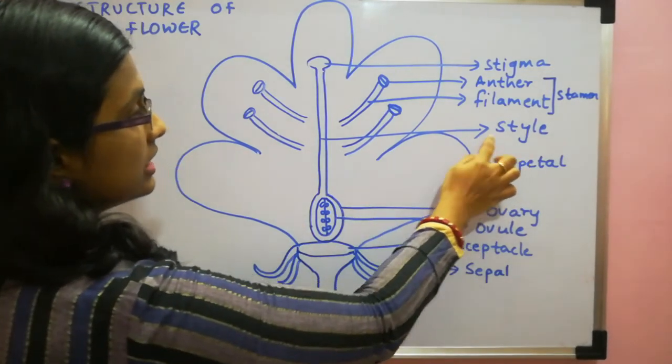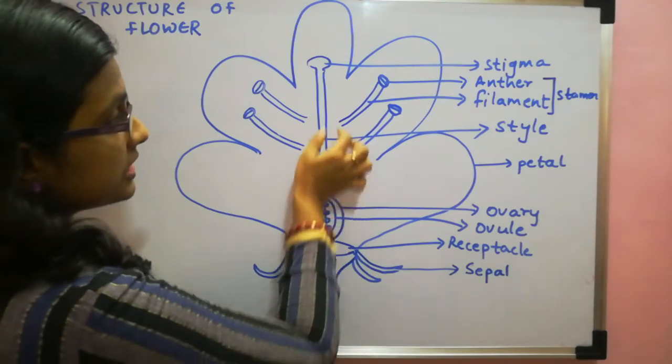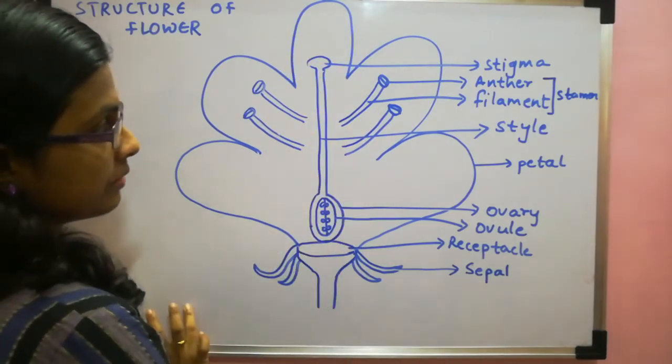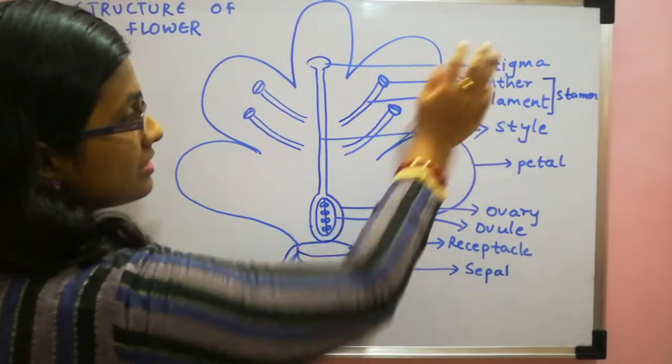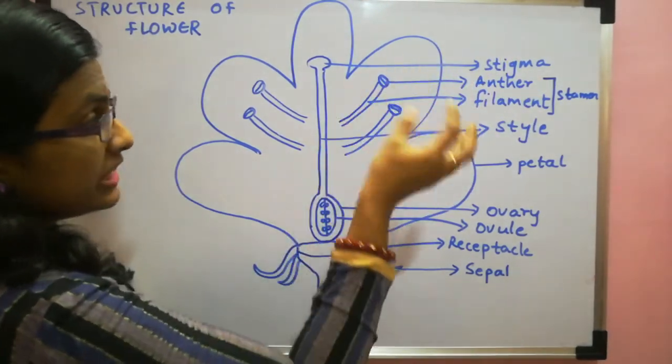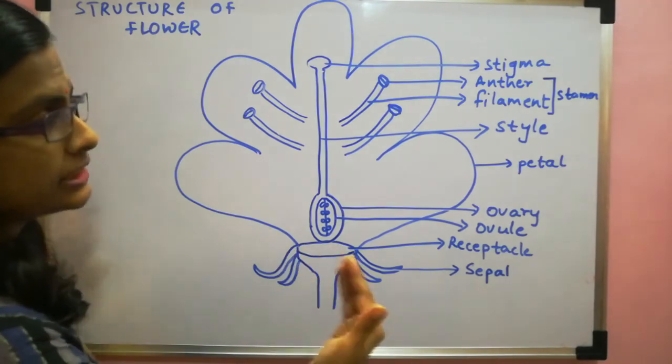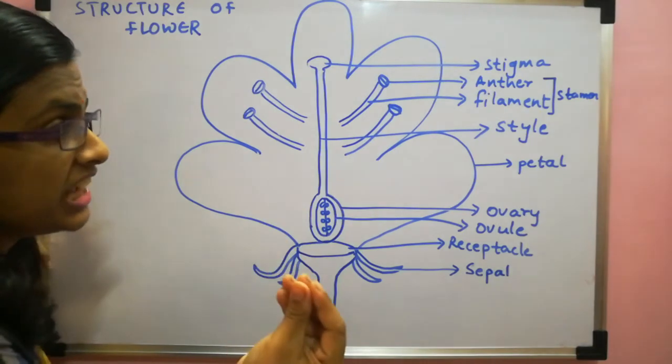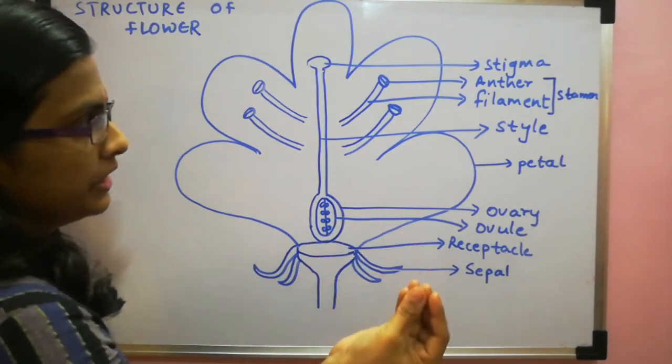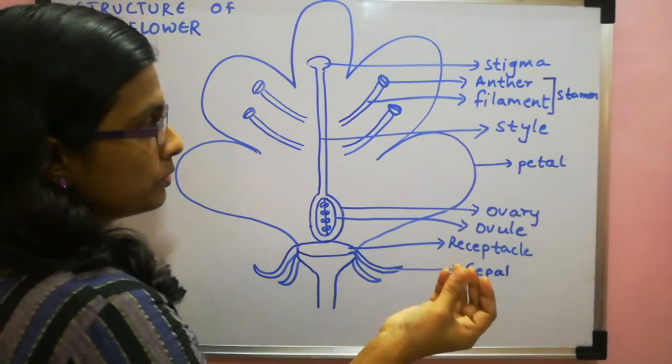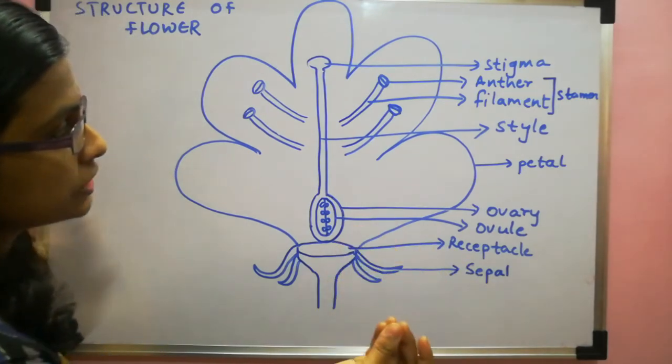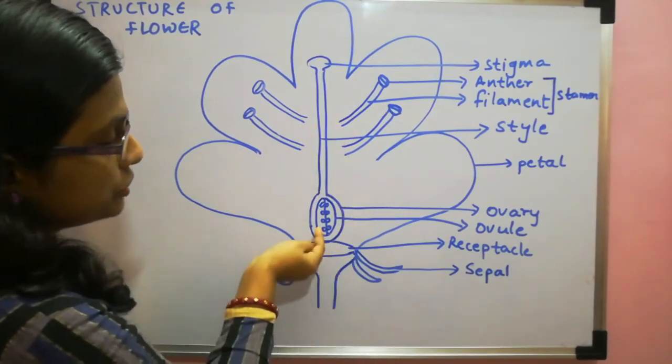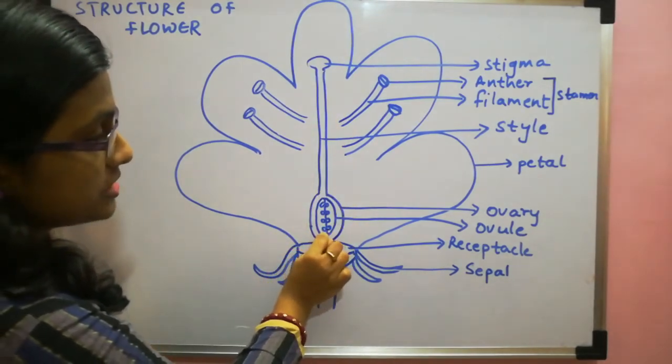Next is style. Style is the tube like structure which helps in transportation of the male gamete towards the female gamete. Now next is stigma. Stigma is that area where pollen grains arrive by various dispersal methods. Pollen grains arrive over to the stigma which is little bit sticky in nature and it guides the pollen grain to produce pollen tube. Pollen tube is a tube like structure through which the pollen grain will travel through the style and reaches to the female gamete present in the ovule.